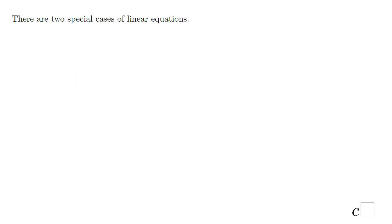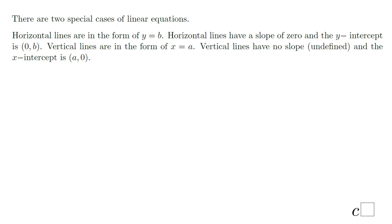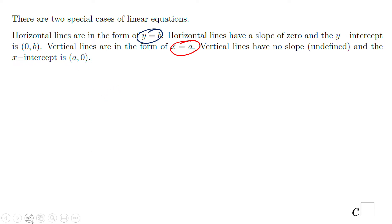There are two special cases of linear equations: horizontal lines and vertical lines. Horizontal lines are in the form y = b, and vertical lines are in the form x = a. Horizontal lines have a slope of zero and the y-intercept is b. Vertical lines have an undefined slope — don't say slope zero — and the x-intercept is (a, 0).